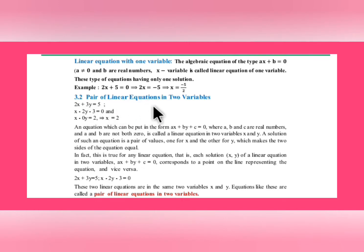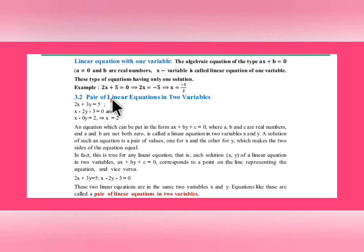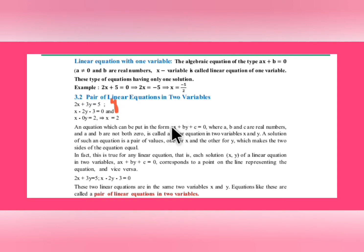Moving to pair of linear equations in two variables. For example: 2x + 3y = 5 has two variables; x − 2y − 3 = 0 also has two variables; and x − 0y = 2 has y mentioned as 0y. Any two such equations form a pair of linear equations in two variables. The general form is ax + by + c = 0, where a, b, c are real numbers, not both a and b zero, and x, y are variables.